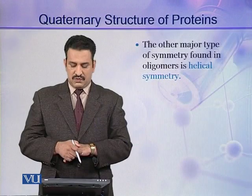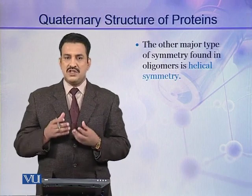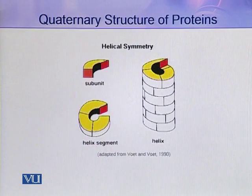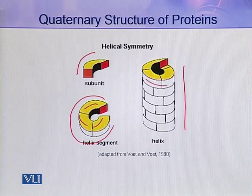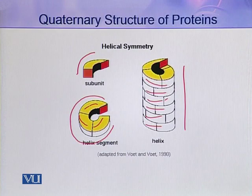The other major type of symmetry besides rotational symmetry is helical symmetry. In helical symmetry, protein subunits or protomers are helically arranged. As you can see in this figure, a single protomer is shown, and these protomers attach together to form a single helix segment. Many such helix segments are arranged together, exhibiting helical symmetry at the quaternary level of organization. An example of such symmetry is found in the capsids of viruses like tobacco mosaic virus.